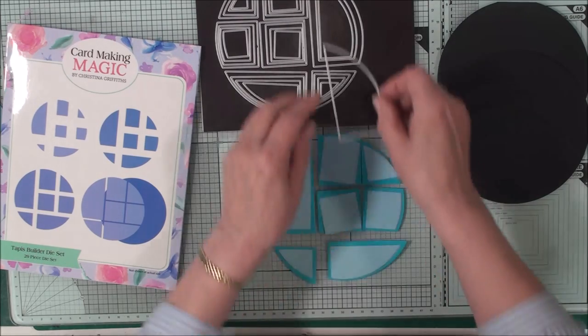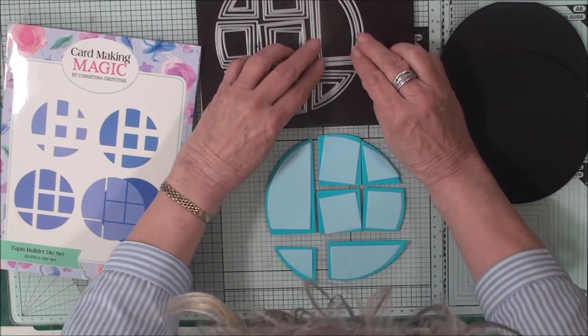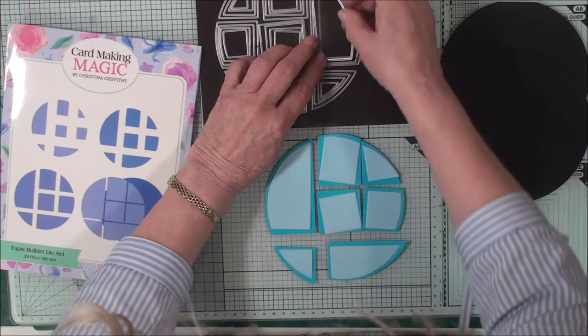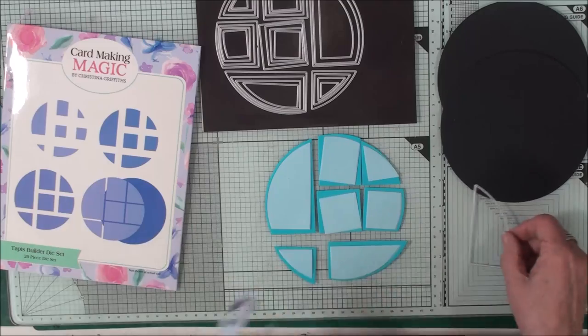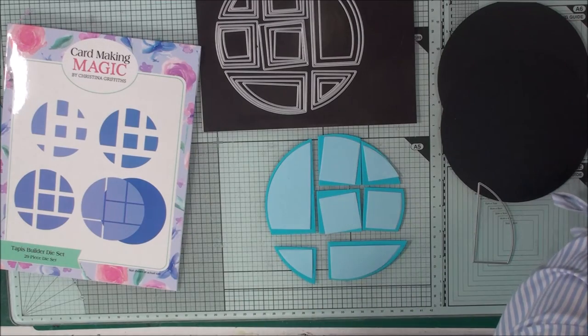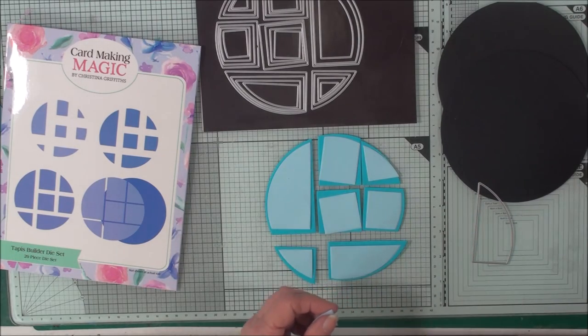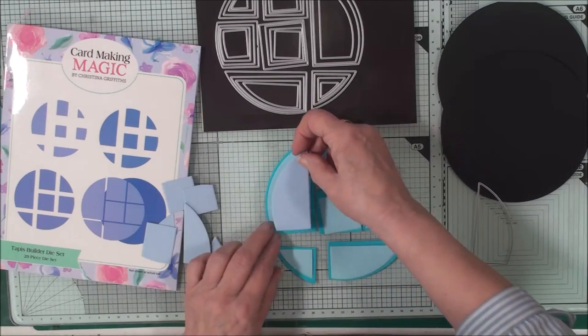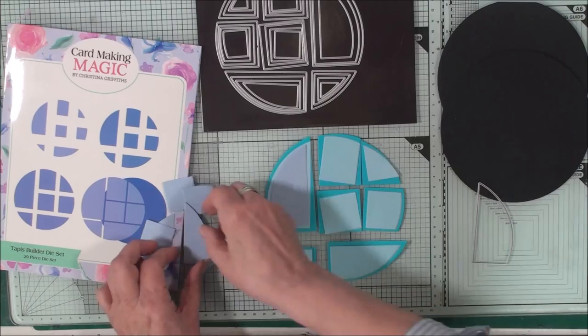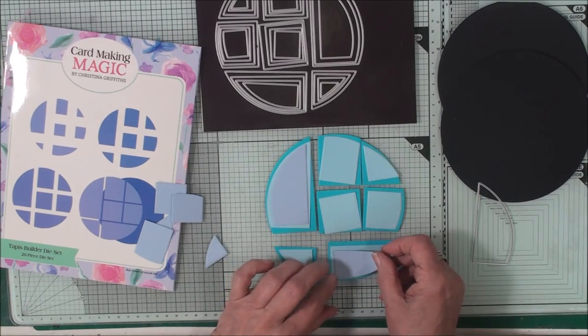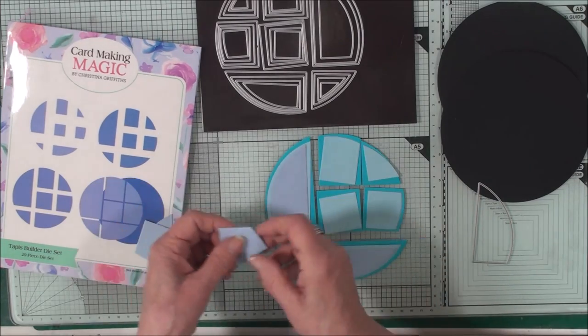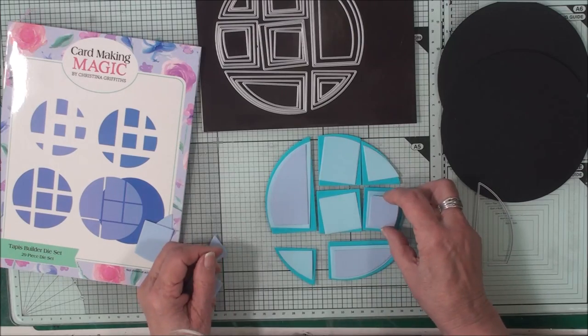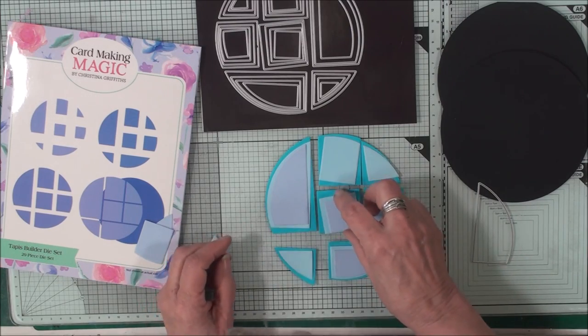Once you've done that, put your second layer of dies back on your sheet and get your third layer and then you can cut a paler color still to go next on your card. That's going to sit on there, this will sit along there, this little short one will sit in there, the square goes in the middle.